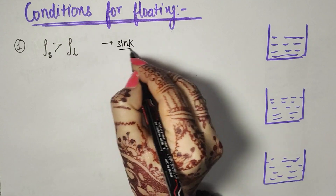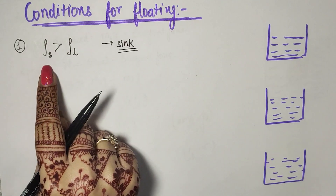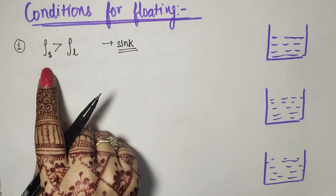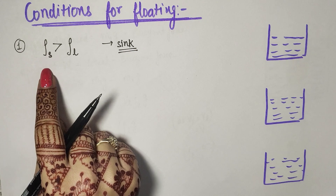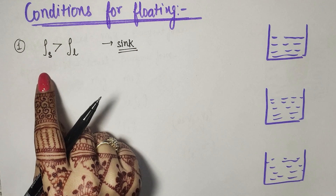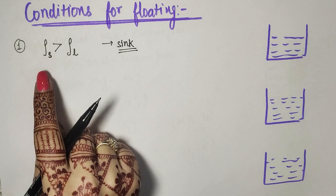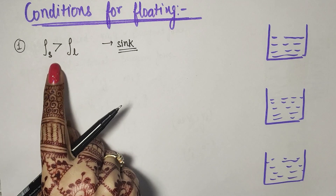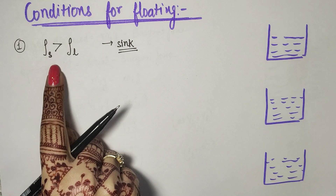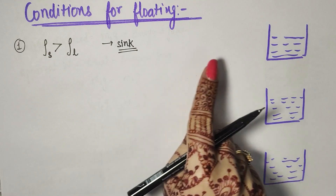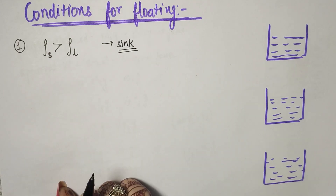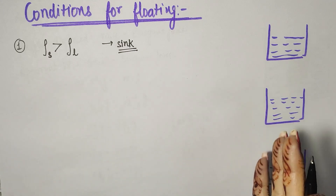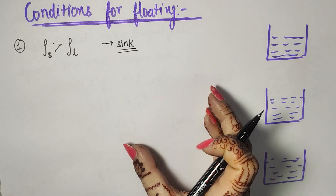So if we talk about conditions for floating: the first condition is that if the density of the substance is greater than the density of the liquid, then the substance will sink. What does density mean? Density means which thing is more dense. For example, take wood and iron — which is more dense? 1 kg of wood becomes a large box, but 1 kg of iron becomes a small box.